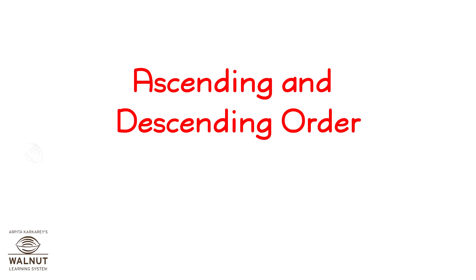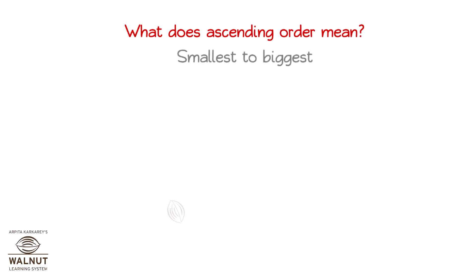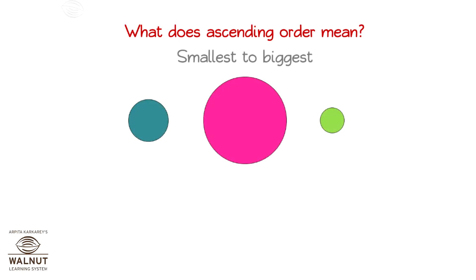Ascending and Descending Order Number Work. What does ascending order mean? Smallest to biggest. If we have to arrange these circles in ascending order, we put them from smallest to biggest, like this.